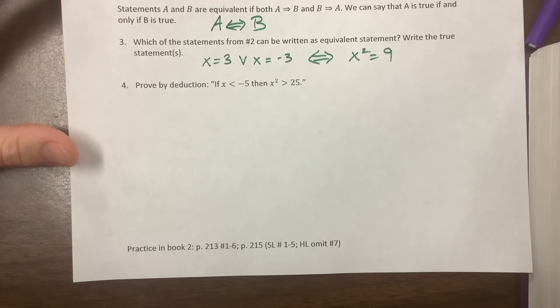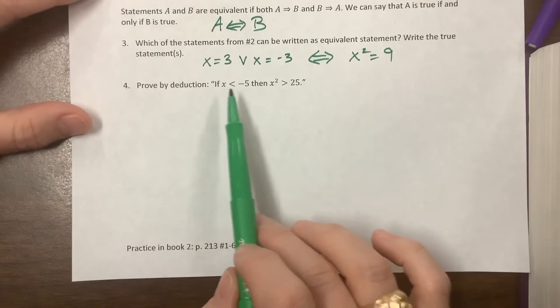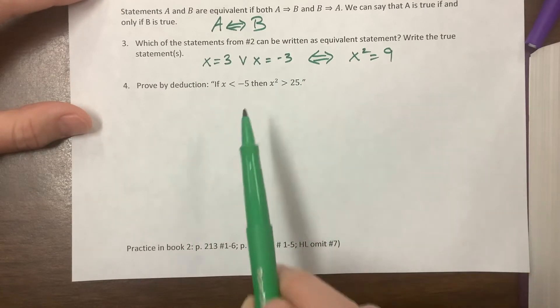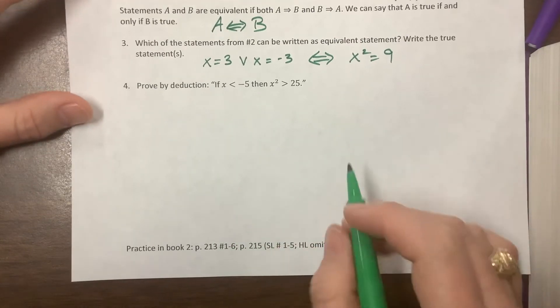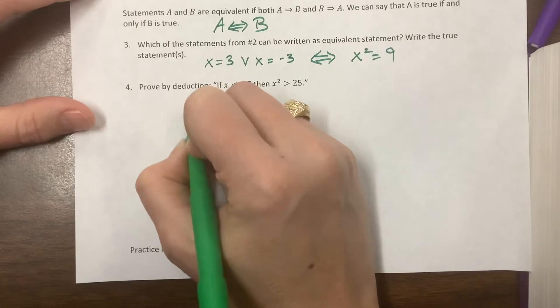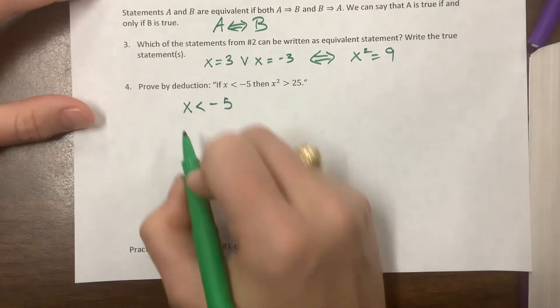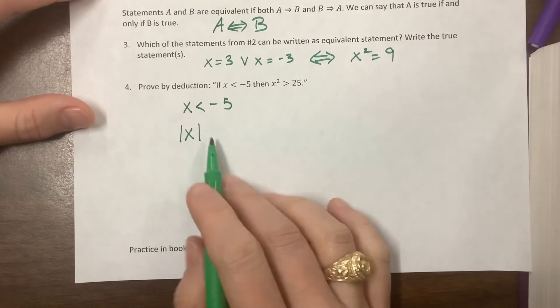On this one, they tell us: if x < -5, then x² > 25. This is a proof by deduction, which means we start here. It's a proof by implication - this will imply something which we'll be able to keep going. We have x < -5, which tells us that the absolute value of x has to be...